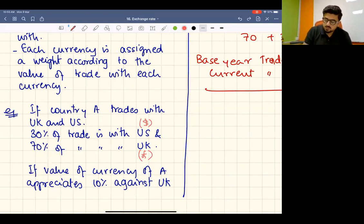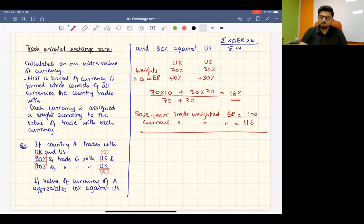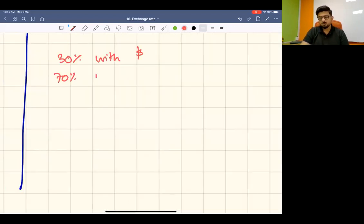trade with US dollars, so 30 percent weight there, and 70 percent with UK pounds, so 70 percent weight there. For example, let's say the country's currency - 30 percent with dollars and 70 percent with pounds. Now let's consider